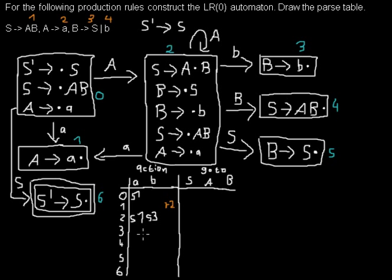For example here in state 3, I have the dot at the end so I can reduce. And I reduce with rule number 4 where B derives to a small b. So I write R4. Then in state number 4 I can do a reduce step with rule number 1. And last but not least in state number 5, I can do a reduce step with the B derives to S rule, which is rule number 3. So I write it down here. And that's every reduce rule I have to take care about.